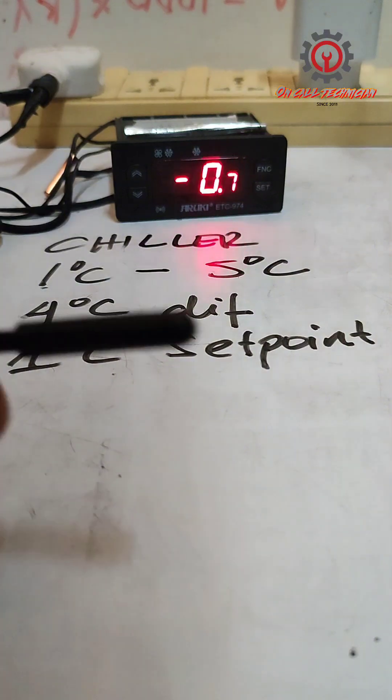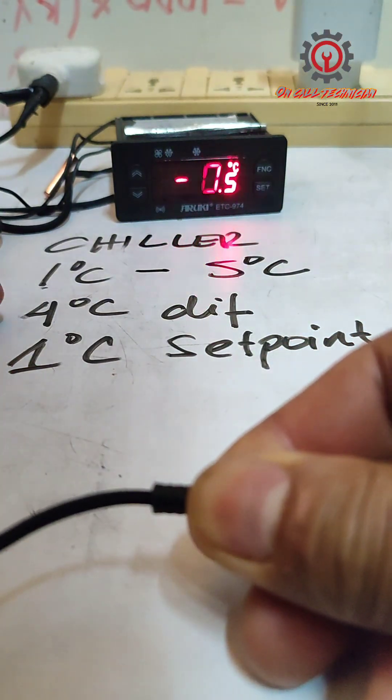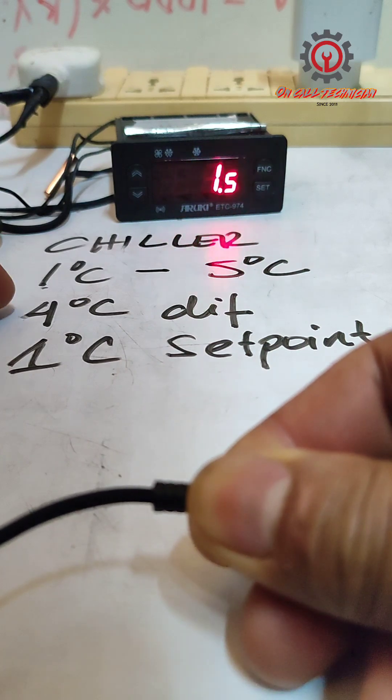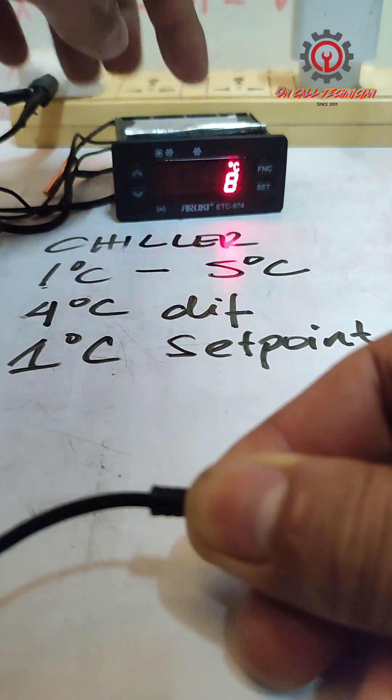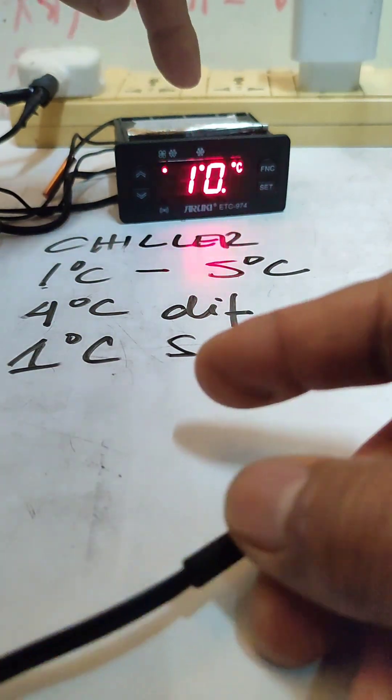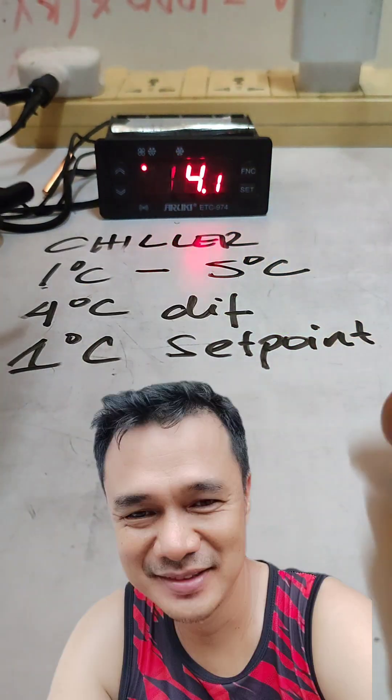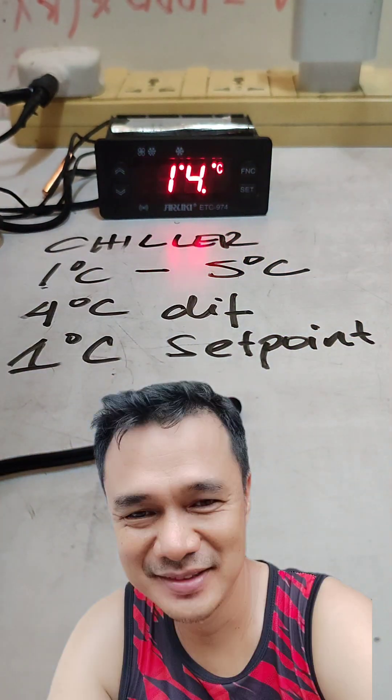I withdraw my probe sensor and take a look. Once the temperature reaches 4 degrees Celsius, it will turn on again. There it is. So this control is now in chiller setting. Thanks for watching.